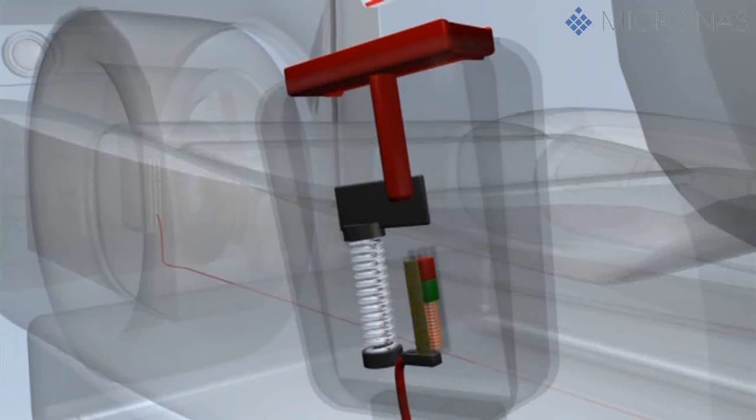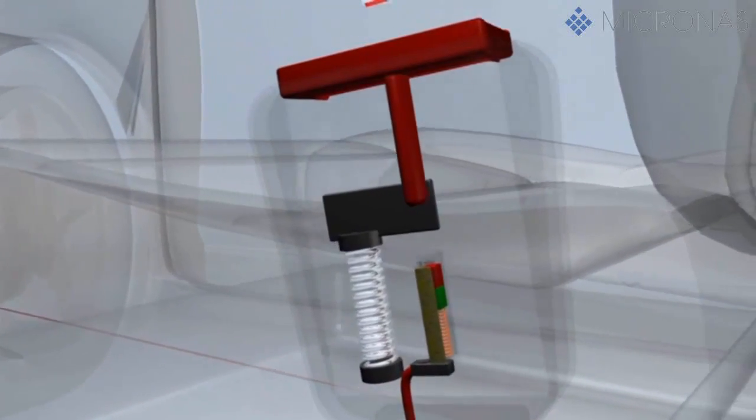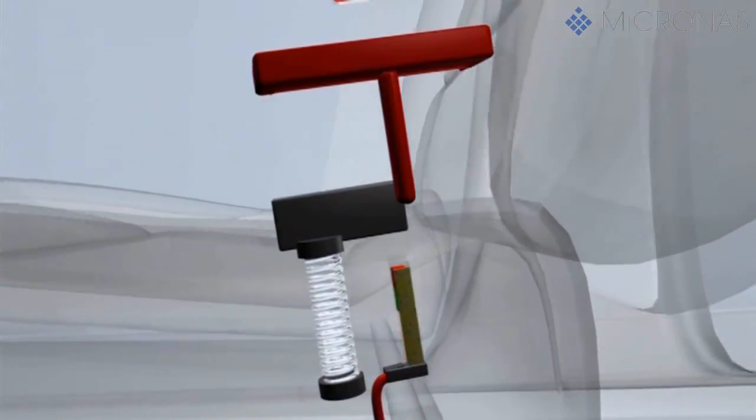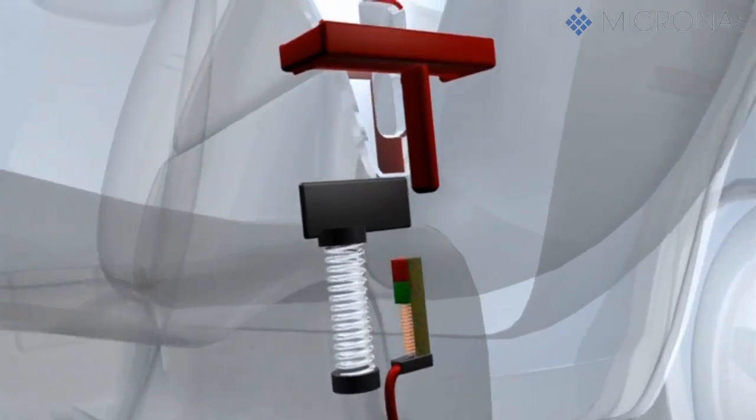The advantage of hall sensors is that they are free of wear and tear. Even liquid, for instance lemonade seeping into the belt lock, will not impair the function of the sensor.